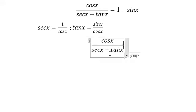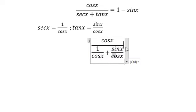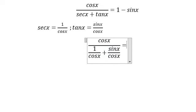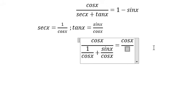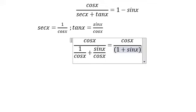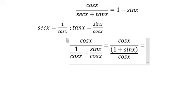We have 1 over cosine x and we have sine x over cosine x. Now we put cosine x in here because they have the same denominator, so we get 1 plus sine x over cosine x.